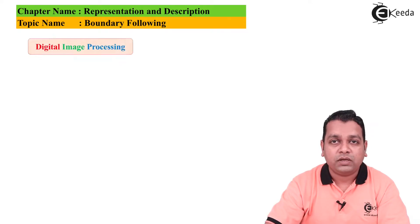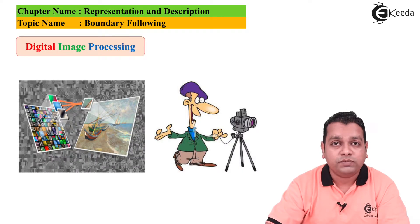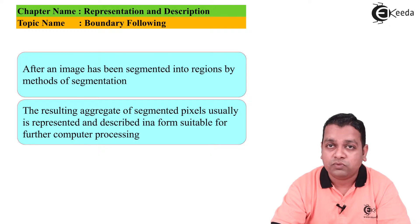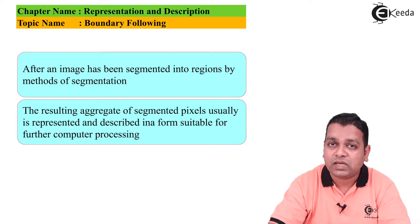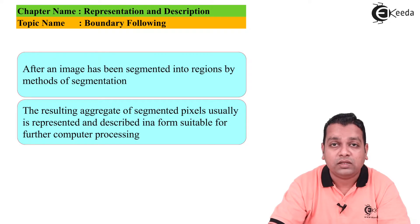We start with boundary following to understand what exactly representation and description are with respect to objects after image segmentation. After an image has been segmented using the procedures from the last chapter, we obtain certain regions in the image. These regions are available for further description and representation. The resulting aggregate of segmented pixels obtained is represented and described in a form suitable for further computer processing techniques.